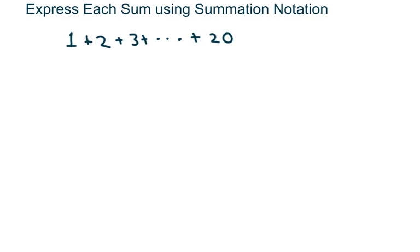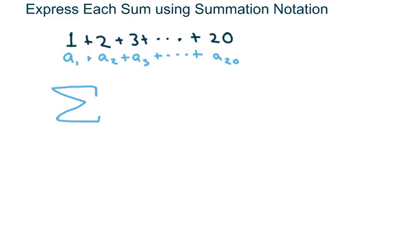Notice that we have three terms here: a(1) + a(2) + a(3) + ... + a(20). You should have already done the video with summation notation. We're starting with k equals 1 and ending with 20, so that's your n. Those are your index numbers.